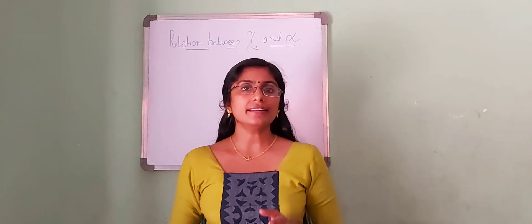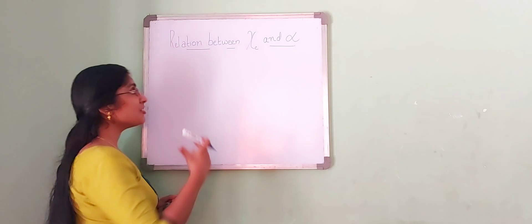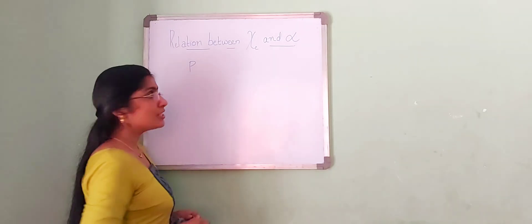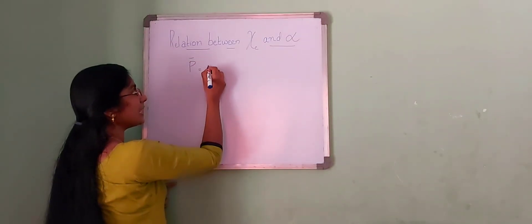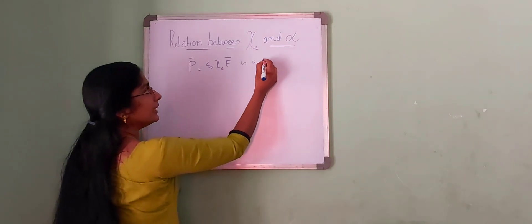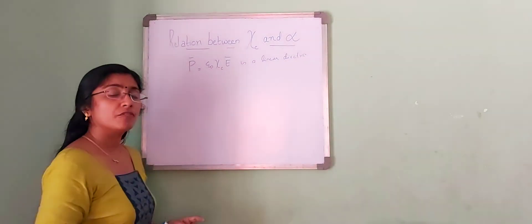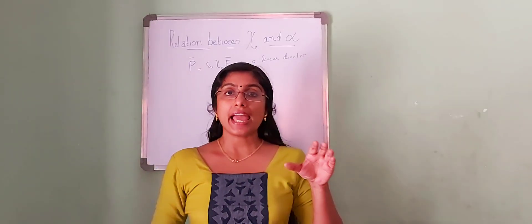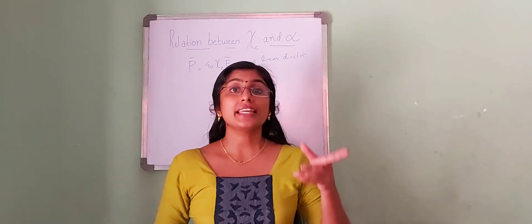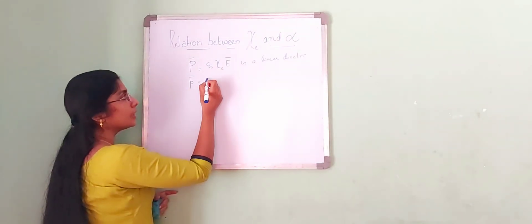As you all know, in a linear dielectric medium, the polarization vector P is directly proportional to the electric field E, so that we can write P equal to ε₀χₑE in a linear dielectric. We also know that when you apply an electric field on a non-polar atom, it gets polarized, and the induced dipole moment is given by p equal to αE.